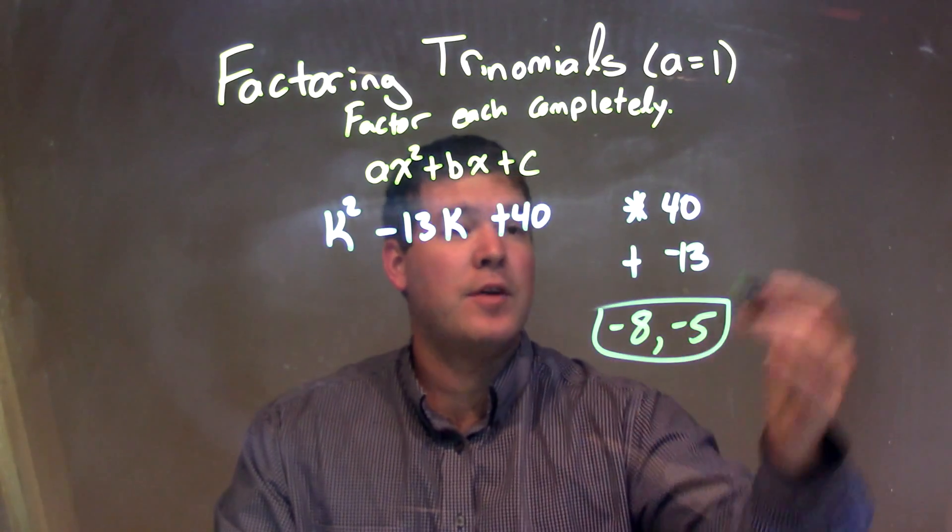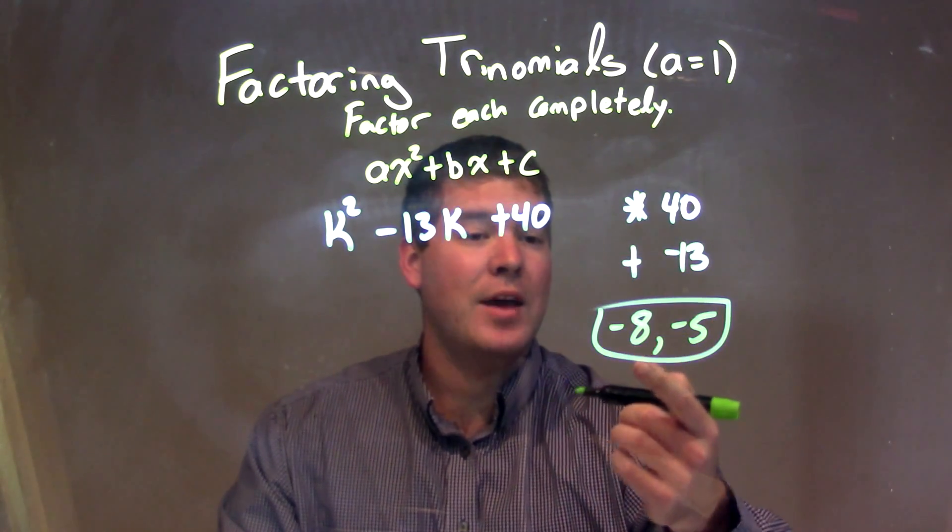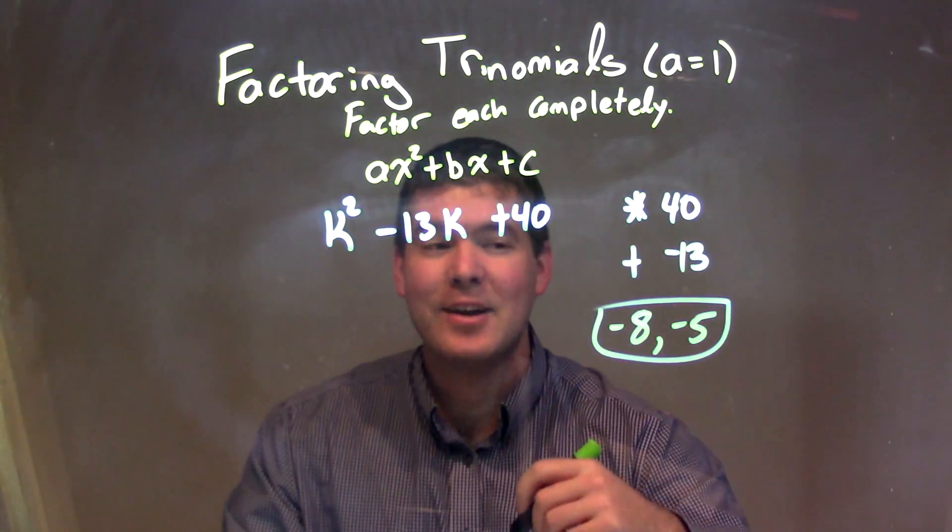Negative 8 times negative 5 is a positive 40, but negative 8 plus a negative 5 is negative 13.